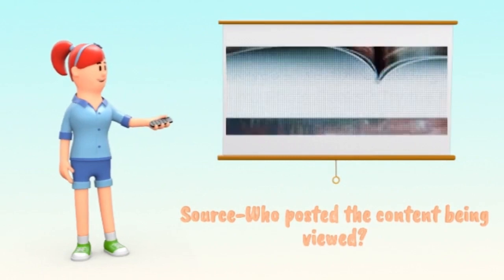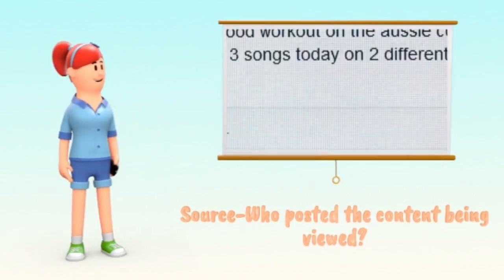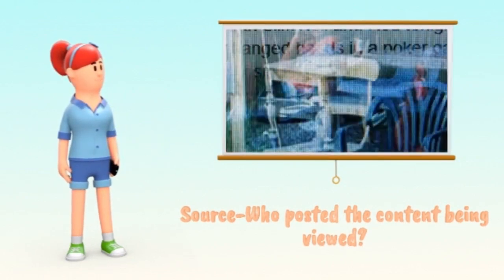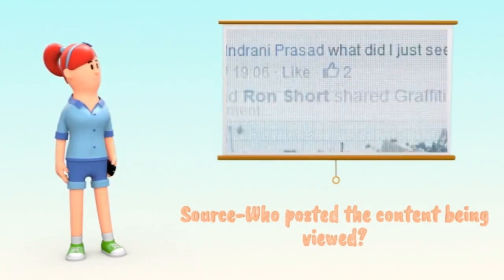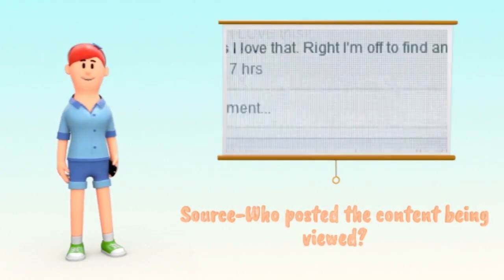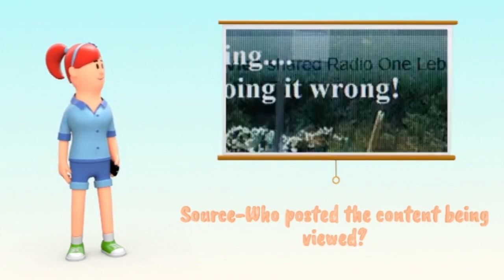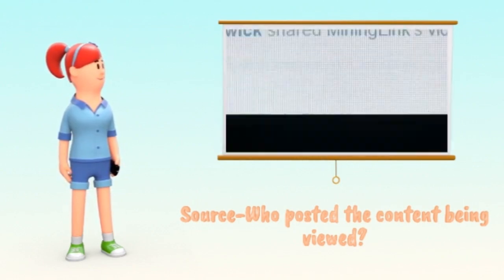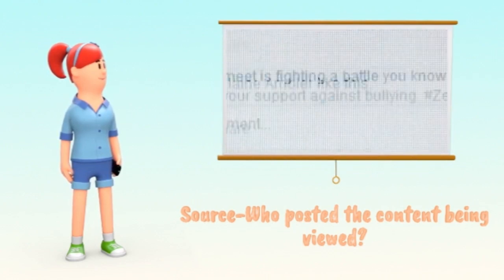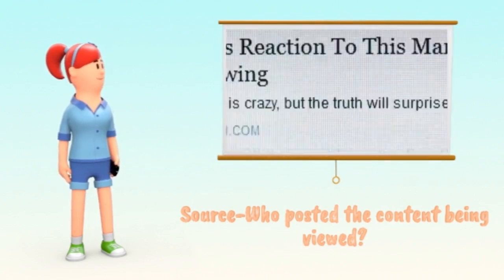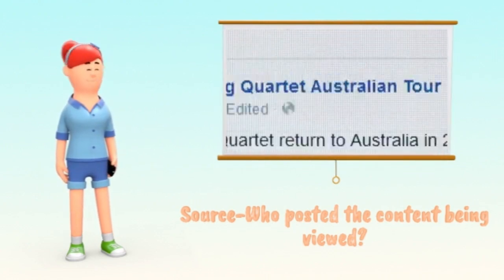Googling individual phrases from the text we are checking can help us find other sites where the post has appeared, and from there we can find out which of them is the oldest. The next step is to understand who is behind the site and what interests lie behind each site along the news channel. Tools such as WhoIs and Register.bg search engines can help us.